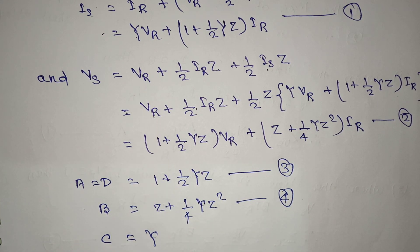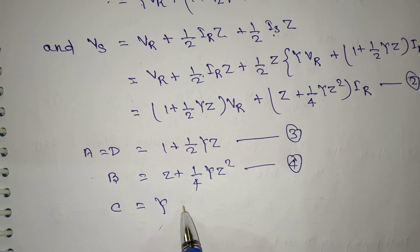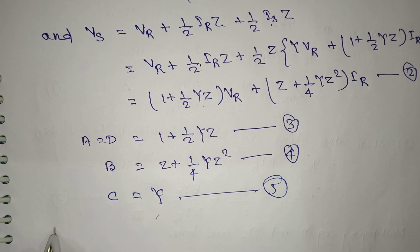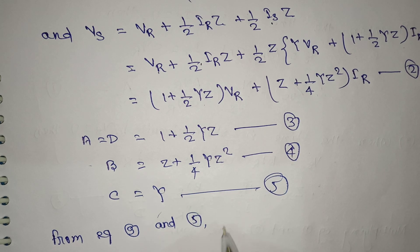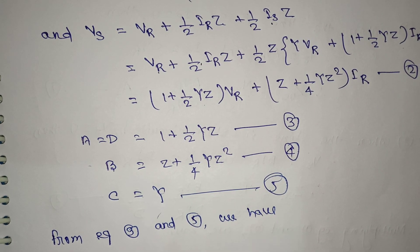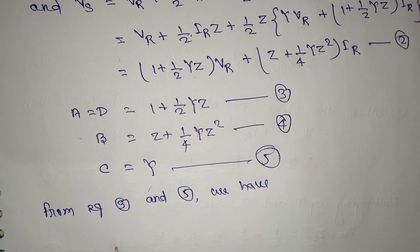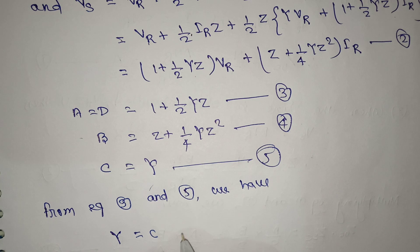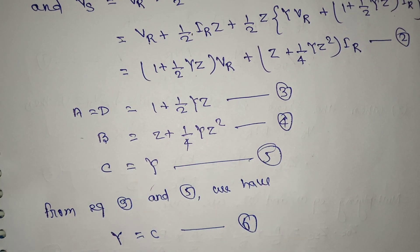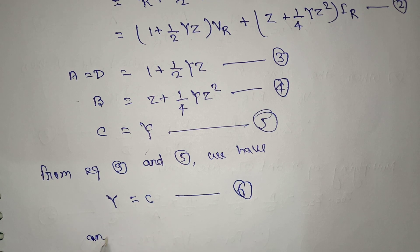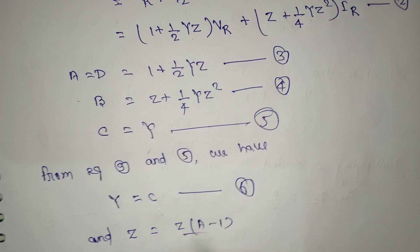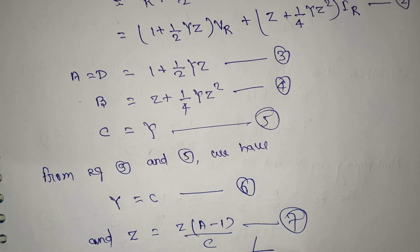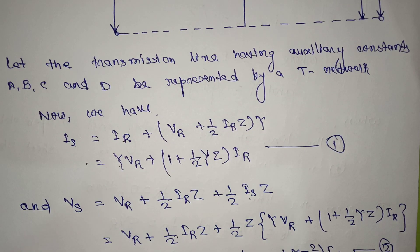From equation 3 and equation 5, we have Y = C — this is equation number 6 — and Z = (A − 1)·(2/C). This completes the derivation for the equivalent T network of the long transmission line. Thank you.